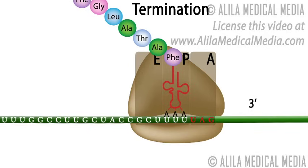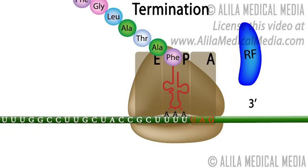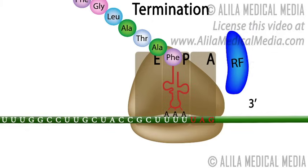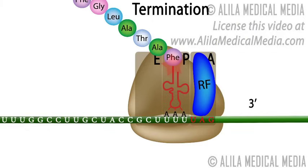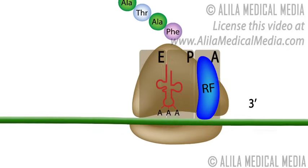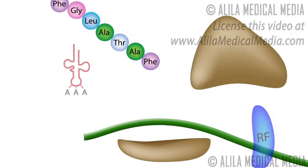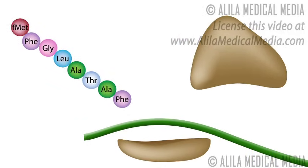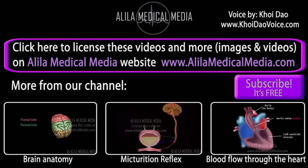Termination happens when one of the three stop codons is positioned in the A site. No tRNA can fit in the A site at that point, as there are no tRNAs that match that sequence. Instead, these codons are recognized by a protein, a release factor. Binding of the release factor catalyzes the cleavage of the bond between the polypeptide and the tRNA. The polypeptide is released from the ribosome, and the ribosome dissociates into subunits and is ready for a new round of translation.